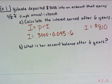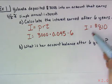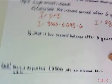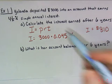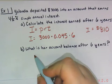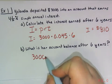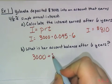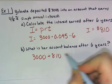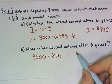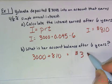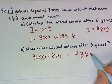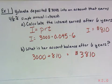What is her account balance after six years? Since eight hundred and ten dollars is how much she earned in interest, and she started with three thousand dollars, we add those together to find that after six years she would have three thousand eight hundred and ten dollars.